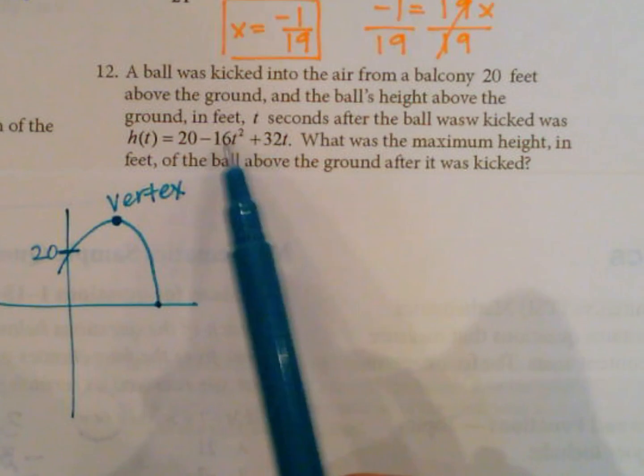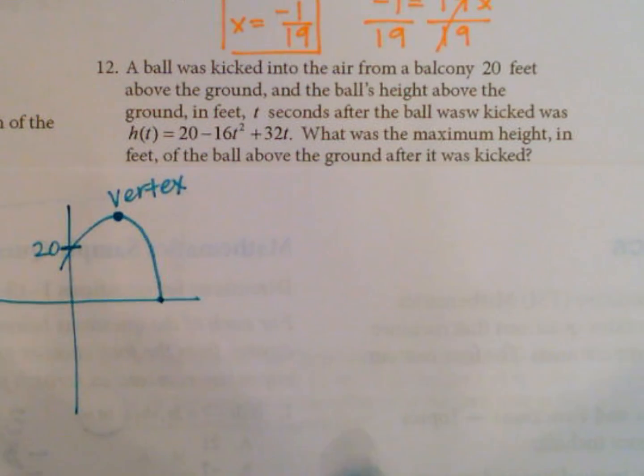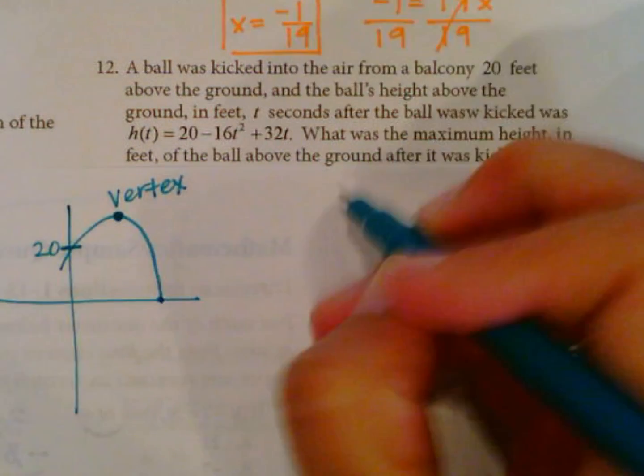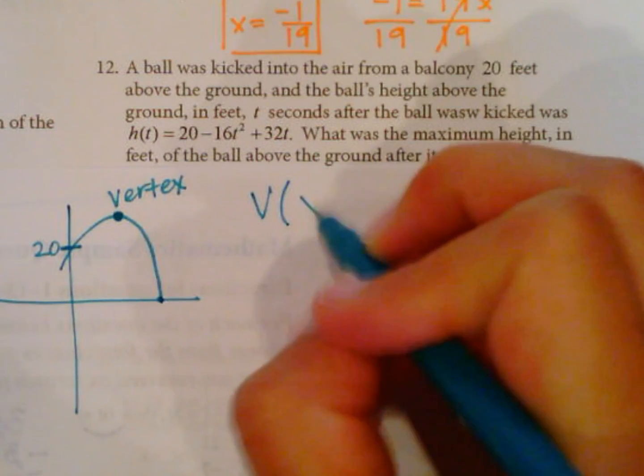The maximum height will occur at the vertex. Always, the maximum or the minimum of a parabola or of a quadratic problem with the variable squared—any of these cases, the maximum or minimum value is always going to occur at the vertex.